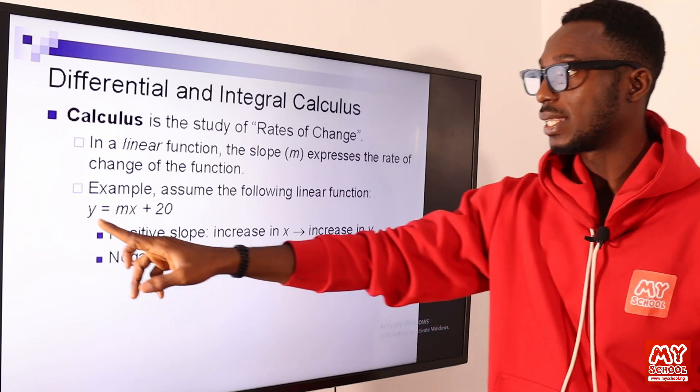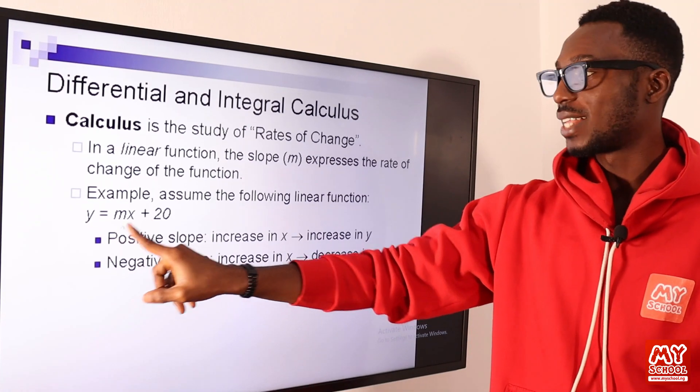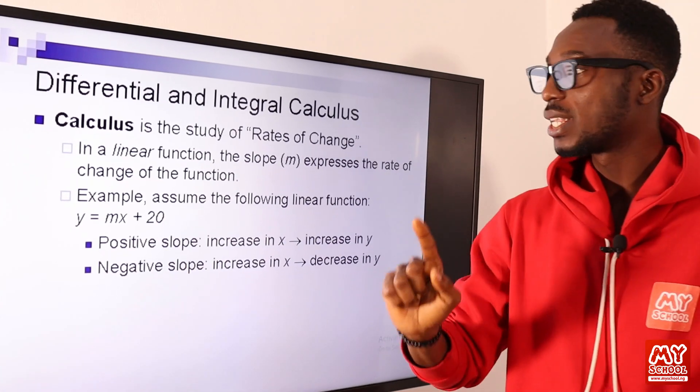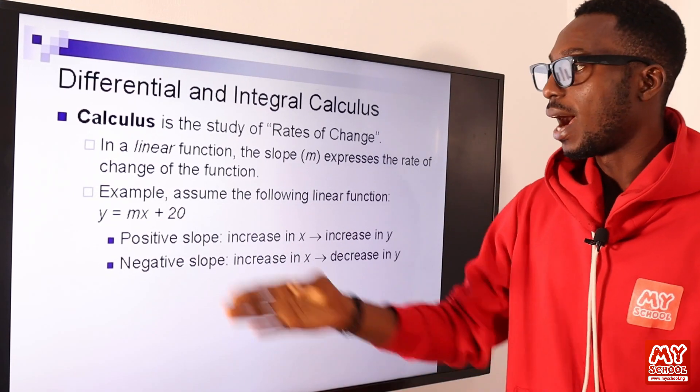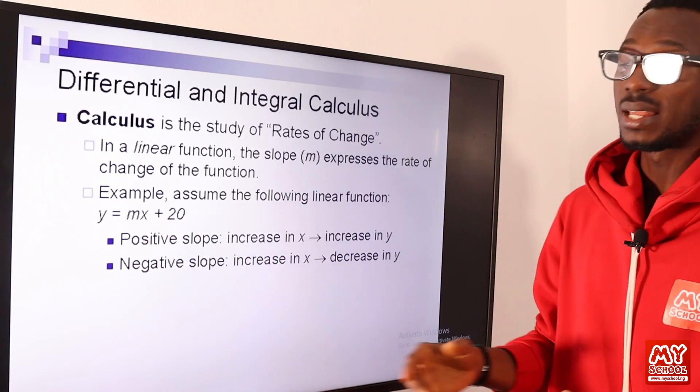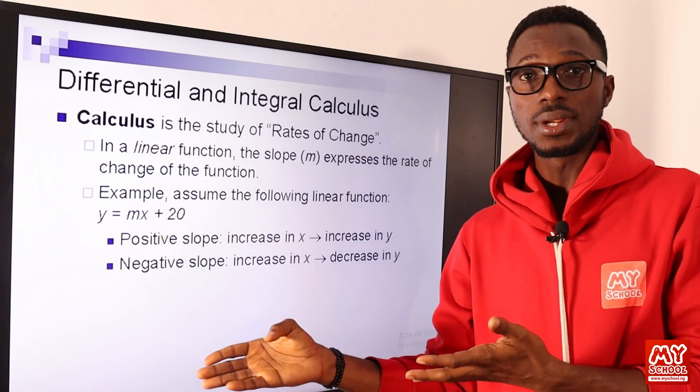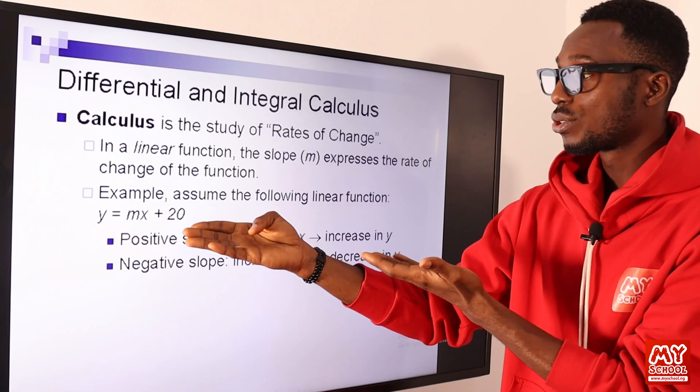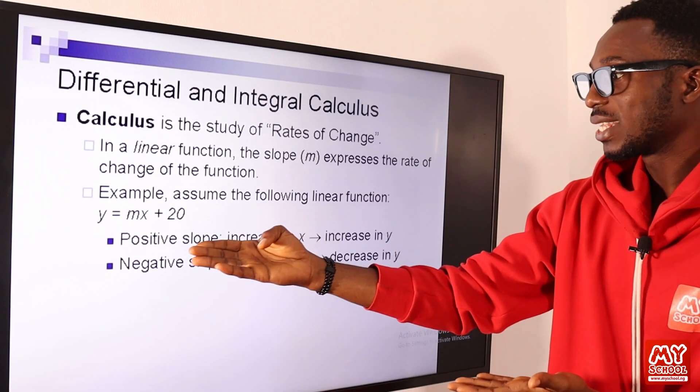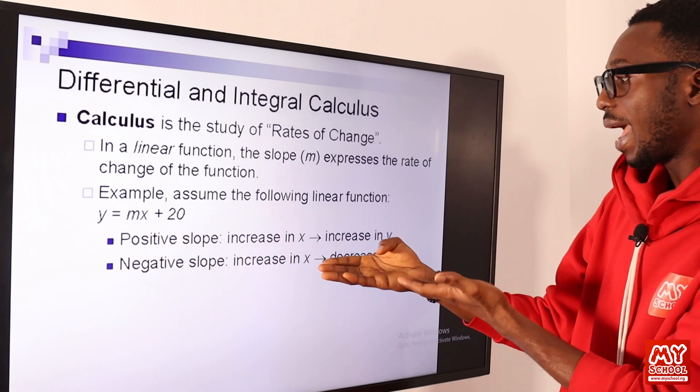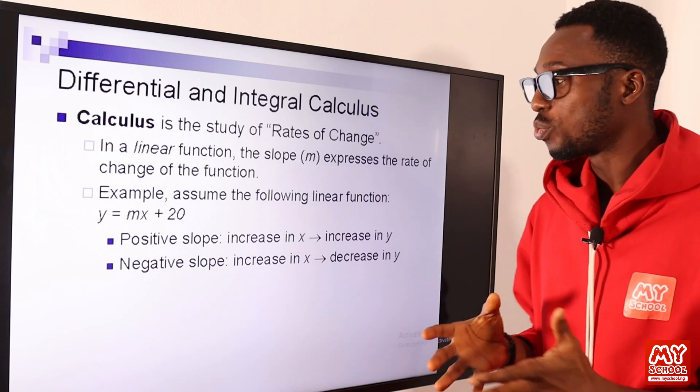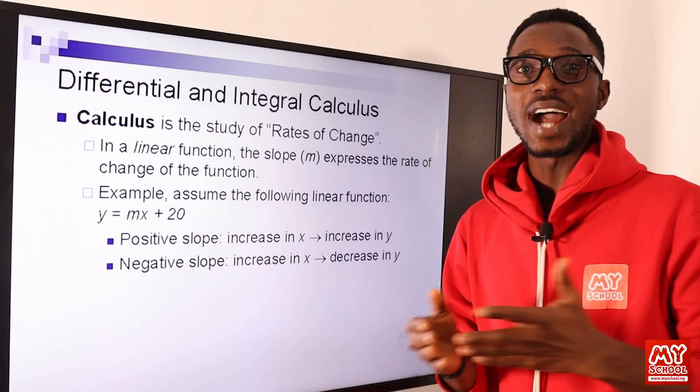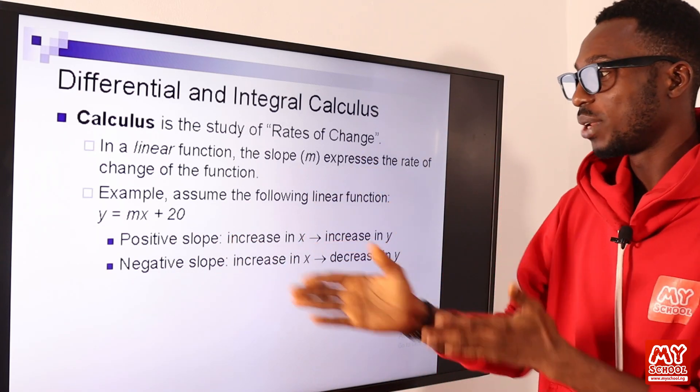Assume the following linear function: y = mx + 20. You can see this is your slope and this is your intercept. If the value of x is 3 and your slope is positive 2, so 2 times 3 gives us 6 plus 20, that is 26. We can see positive slope increase in X causes an increase in Y.